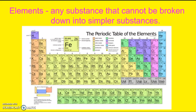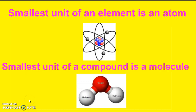An element is any substance that cannot be broken down into simpler substances. So we have the periodic table of elements. Every single one of these elements that you see here is made up of an atom. An atom is the smallest unit of an element. So when you have a compound, the smallest unit of a compound is a molecule. So here you would have one atom of oxygen and then two atoms of hydrogen — that would make up your compound, one molecule of water.